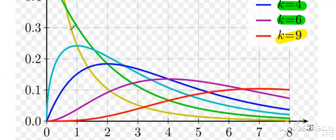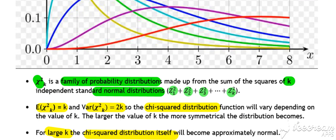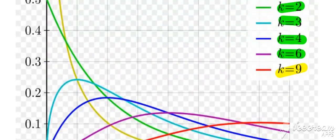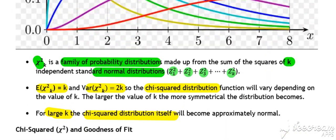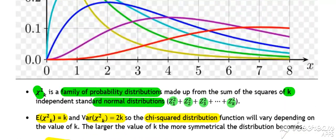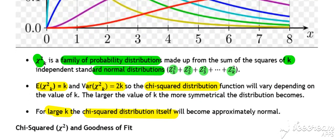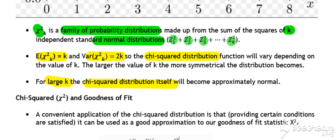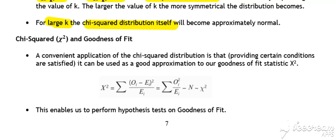You might be wondering, what's this chi-squared distribution got to do with goodness of fit? First of all, just appreciate the chi-squared distribution is a family of probability distributions made up as described that exists in statistics. That's its relevance for now.